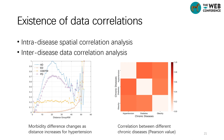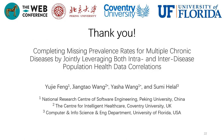In summary, we can indeed use intra- and inter-disease data correlations to improve the performance of our model. In this work, we propose a deep learning-based approach called Compressive Population Health (CPH) to infer and recover missing entries of population health prevalence rates for multiple chronic diseases, by jointly leveraging both intra- and inter-disease population health data correlations. That's all. Thank you for watching.